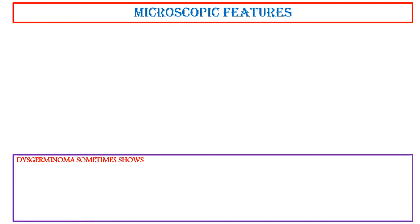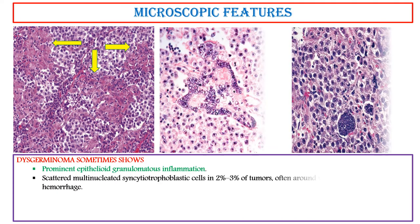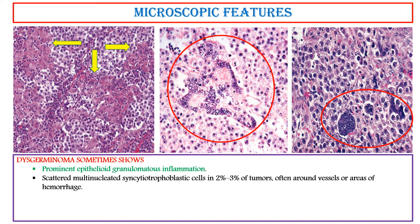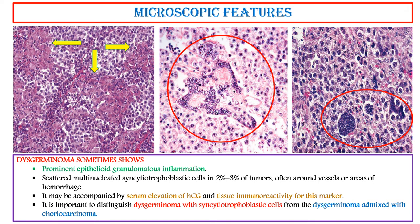This germinoma sometimes shows prominent epithelioid granulomatous inflammation and scattered multinucleated syncytiotrophoblastic cells in 2–3% of tumors, often around vessels or areas of hemorrhage. It may be accompanied by serum elevation of HCG and tissue immunoreactivity for this marker. It is important to distinguish this germinoma with syncytiotrophoblastic cells from dysgerminoma admixed with choriocarcinoma.